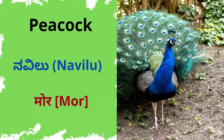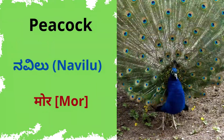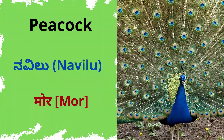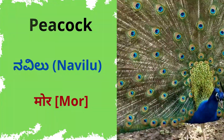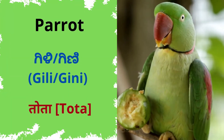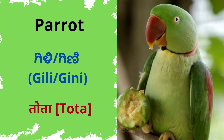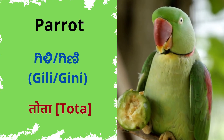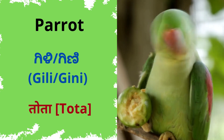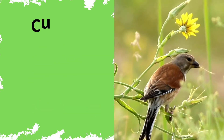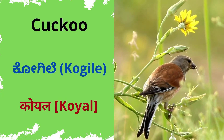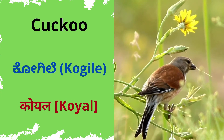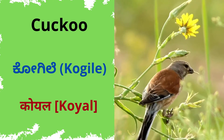Peacock - navilu. Parrot - gilli or guinea. Cuckoo - kukku, kogile.